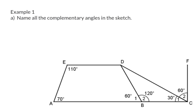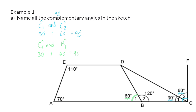Remember that complementary angles add up to 90 degrees. In our sketch the first pair is quite easy to see because they are also adjacent angles — these two angles are the two at point C. So we can say that angle C1 and angle C2 are complementary angles, because 30 degrees plus 60 degrees gives us 90 degrees. Angle B1 is also 60 degrees, which means that angle C1 and angle B1 are also complementary, because 30 plus 60 is 90 degrees. So even though these two angles are not adjacent, they are still complementary.